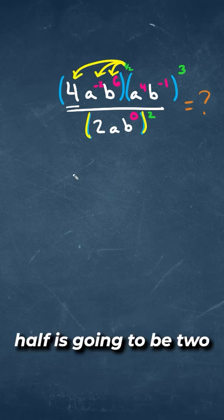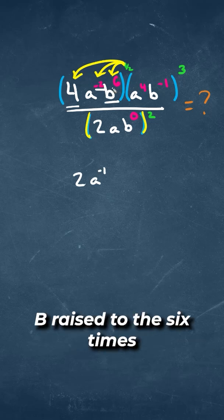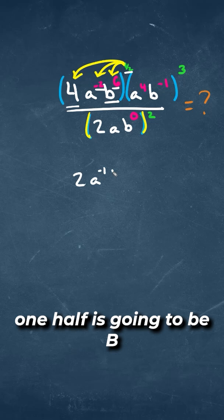So 4 raised to the 1 half is going to be 2. 2 raised to the negative 2 times 1 half will give us negative 1. B raised to the 6 times 1 half is going to be B to the 3rd.